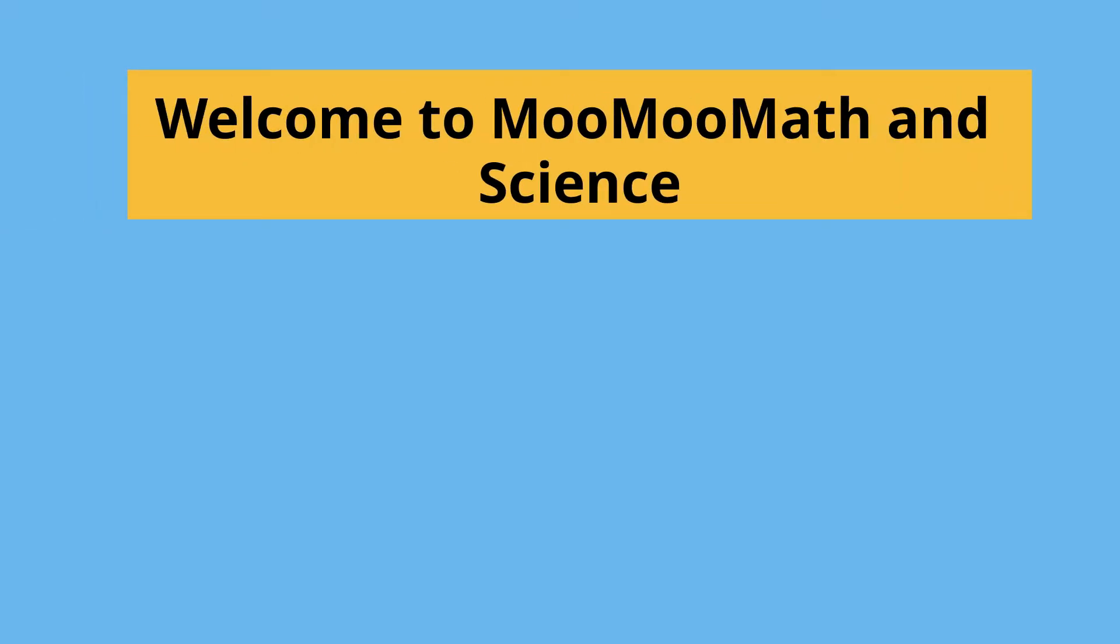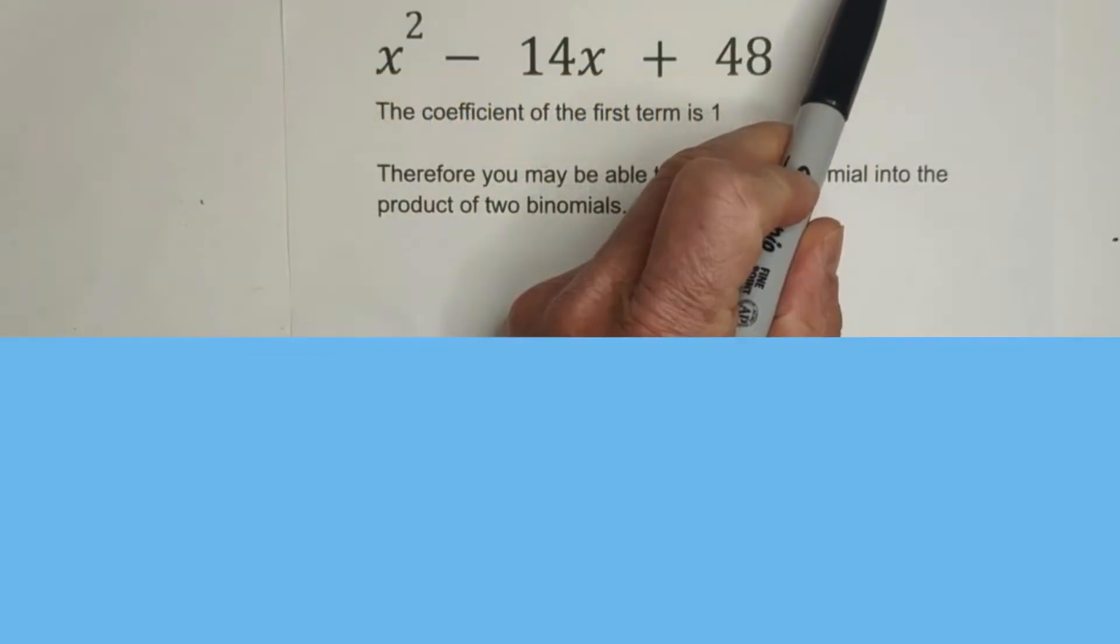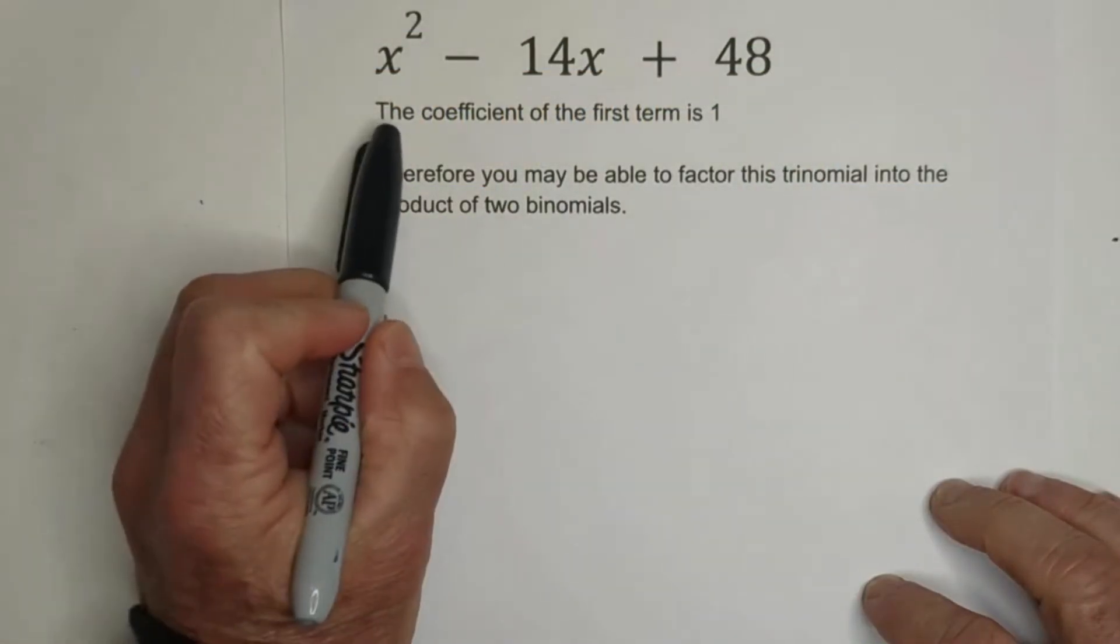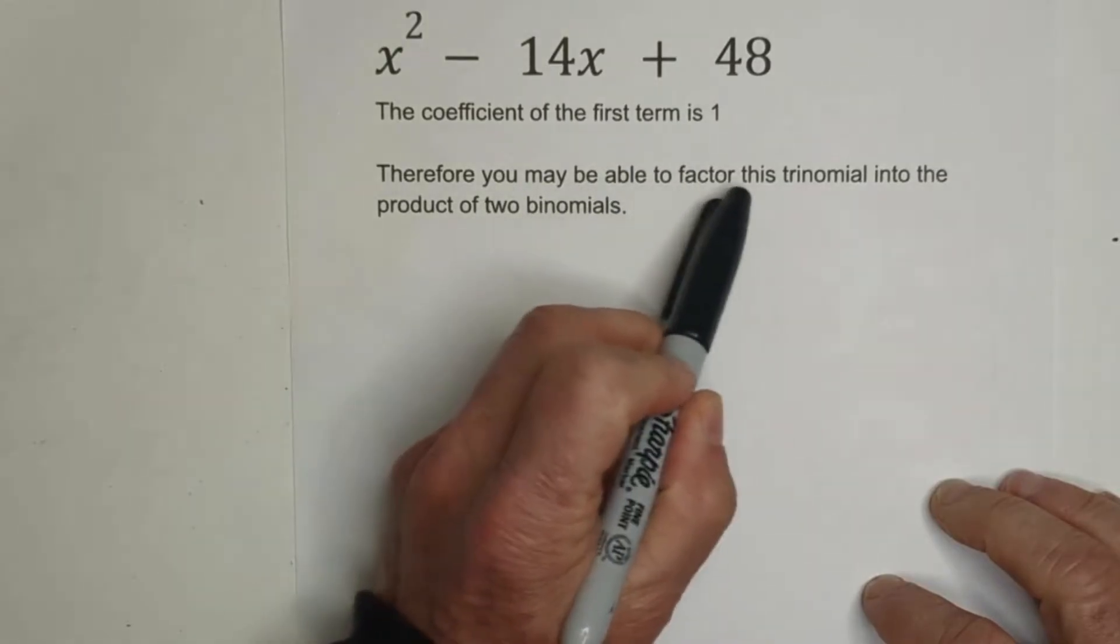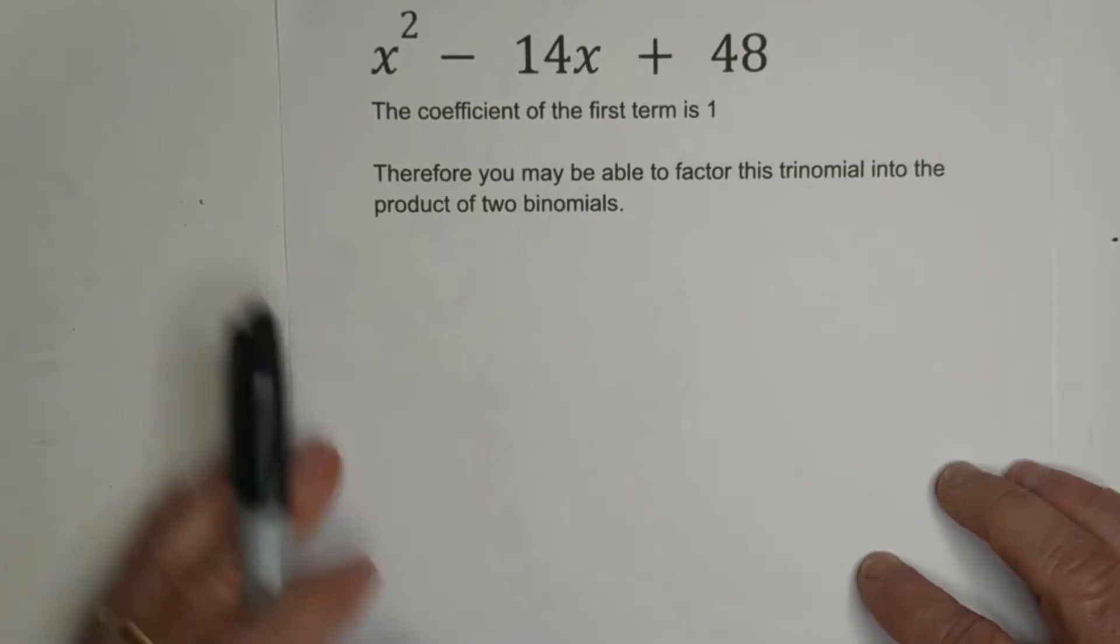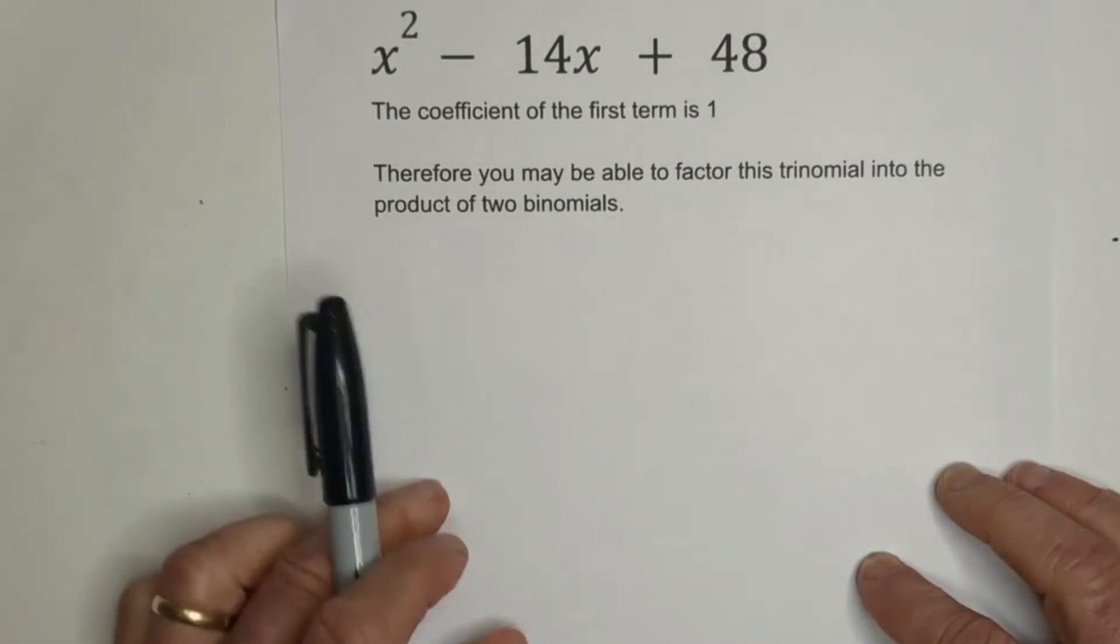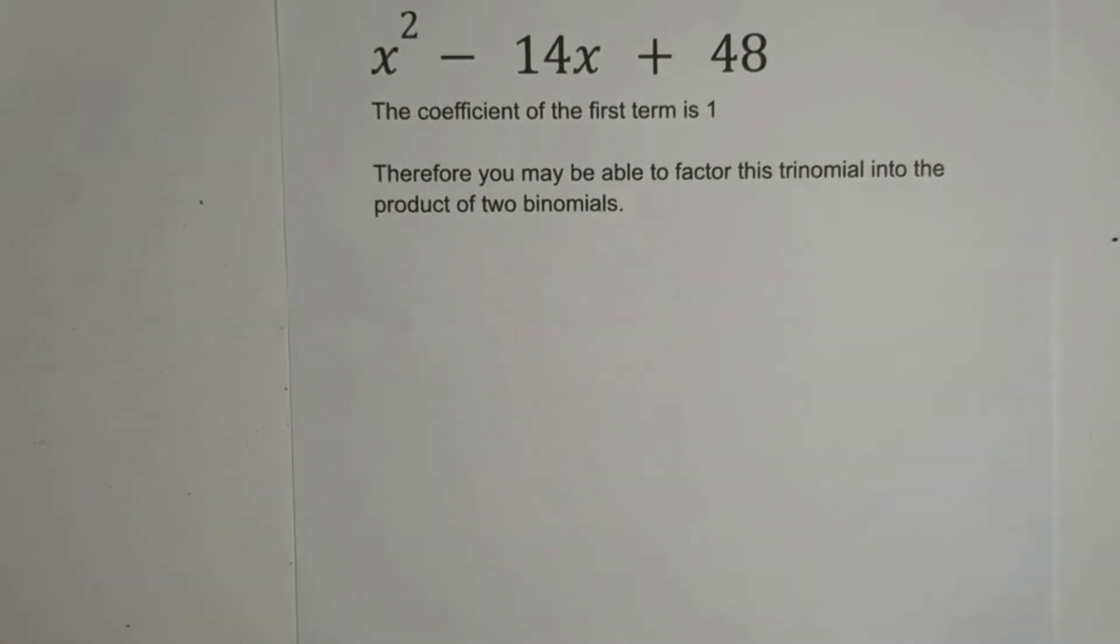Welcome to Moo Moo Math and Science. In this video, let's work on factoring trinomials when A equals 1. So when the coefficient of the first term is 1, you may be able to factor this trinomial into the product of 2 binomials. And if you look at the coefficient, it is indeed 1. If there was a 2x in front of that, we wouldn't be able to use this.